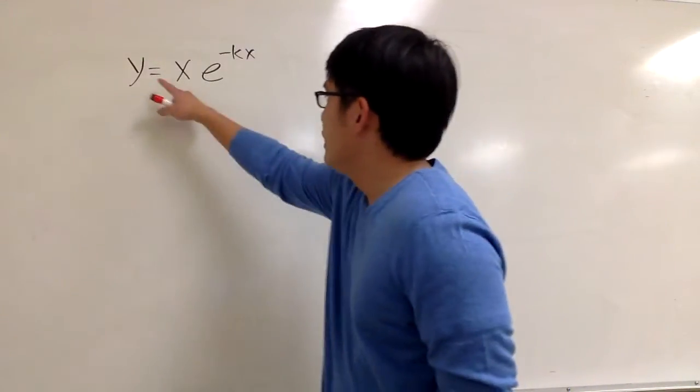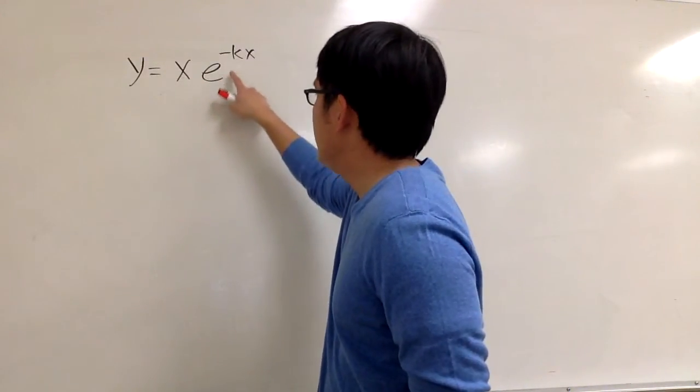Let's find a derivative right here. y is equal to x times e to the negative kx.